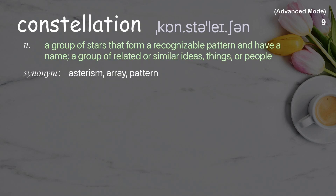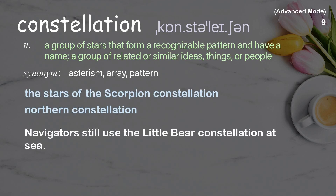Constellation: a group of stars that form a recognizable pattern and have a name; also, a group of related or similar ideas, things, or people. Examples: the stars of the Scorpion constellation; northern constellation. Navigators still use the Little Bear constellation at sea.